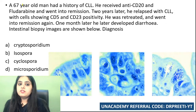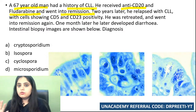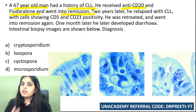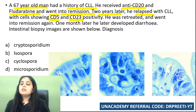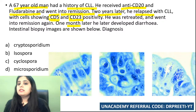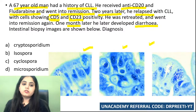The first question: a 67-year-old man with a history of chronic lymphocytic leukemia received anti-CD20 and fludarabine and went into remission. Two years later he had a relapse with cells showing CD25 and CD23 positivity, was re-treated, and went into remission again. One month later he developed diarrhea. Three intestinal biopsy photos are shown. The diagnosis is: cryptosporidium, isospora, cyclospora, or microsporidia?